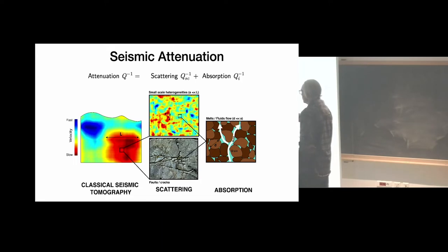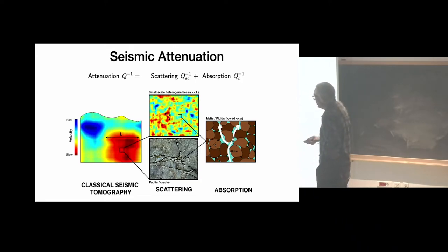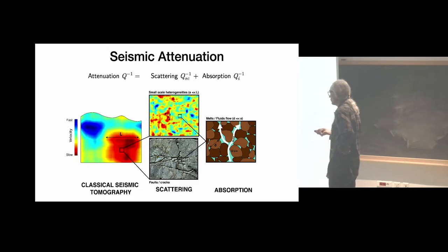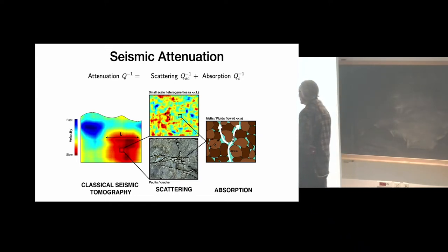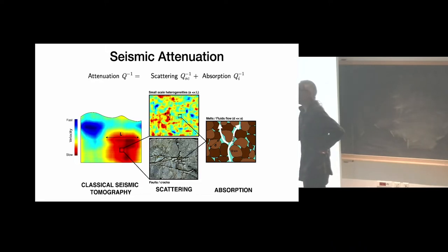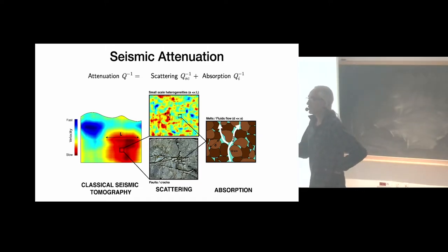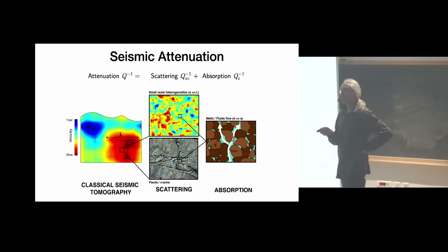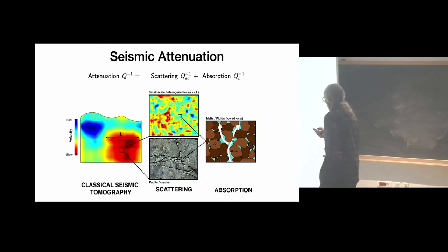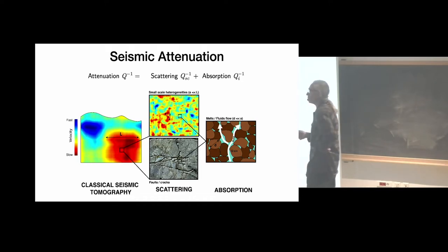We can have many types of fluctuations — continuous fluctuations visible in borehole data. Close to the surface of bodies like the Moon or Mars, we have a lot of porosity with faults and cracks. Colleagues ask us: can you tell me the thickness of the porosity at the surface of the Moon or Mars? Because this has implications for interpreting the gravity field. All these small-scale fluctuations of elastic parameters contribute to what we call scattering attenuation.